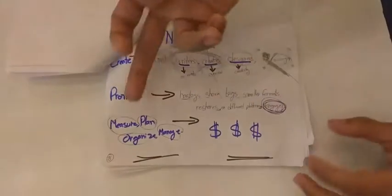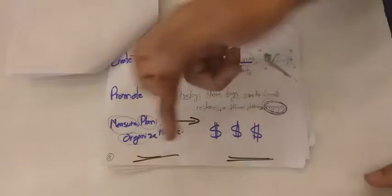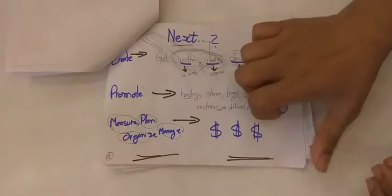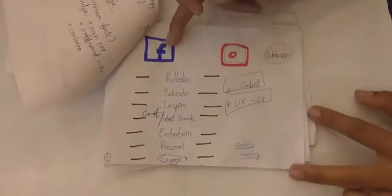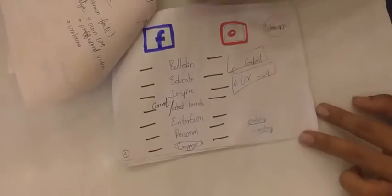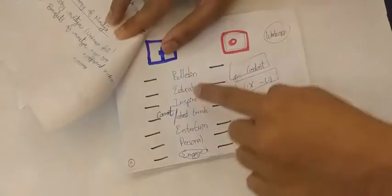Now, we keep a track of all of this by measuring, planning, organizing and managing. This is yet to be discussed. So, I just left dollar signs here. Now, boiling down to FB, Insta and WhatsApp being our prime initial platforms of digital media. What are we doing? We are doing bulletin posts.